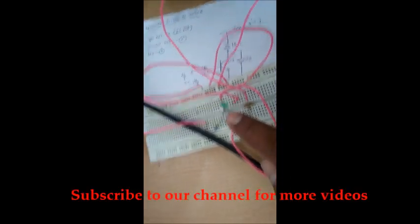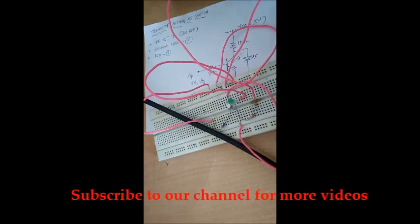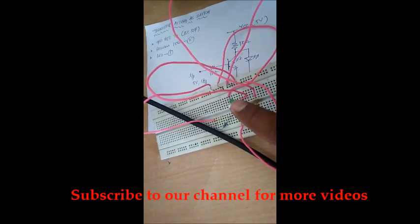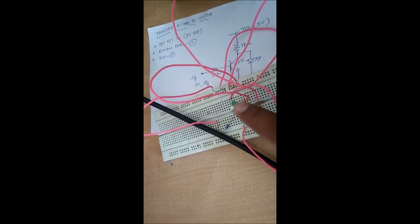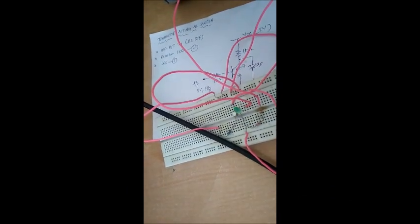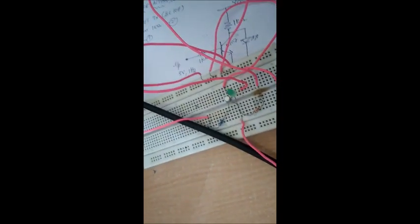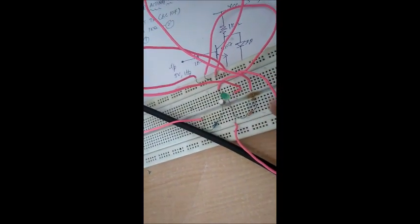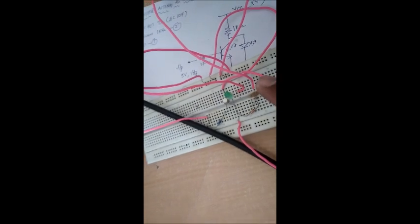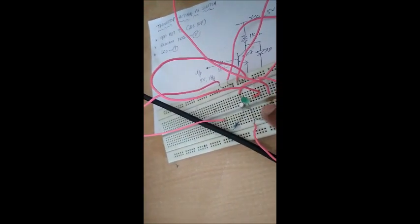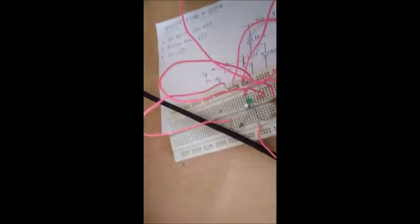If a positive pulse is applied across the base terminal, the transistor enters the saturation region (on condition), the output state is low, and the LED is off. If a negative pulse is applied, the transistor enters the cutoff region (off condition), the output state is high, and the LED is on. This is how the transistor acts as a switch.